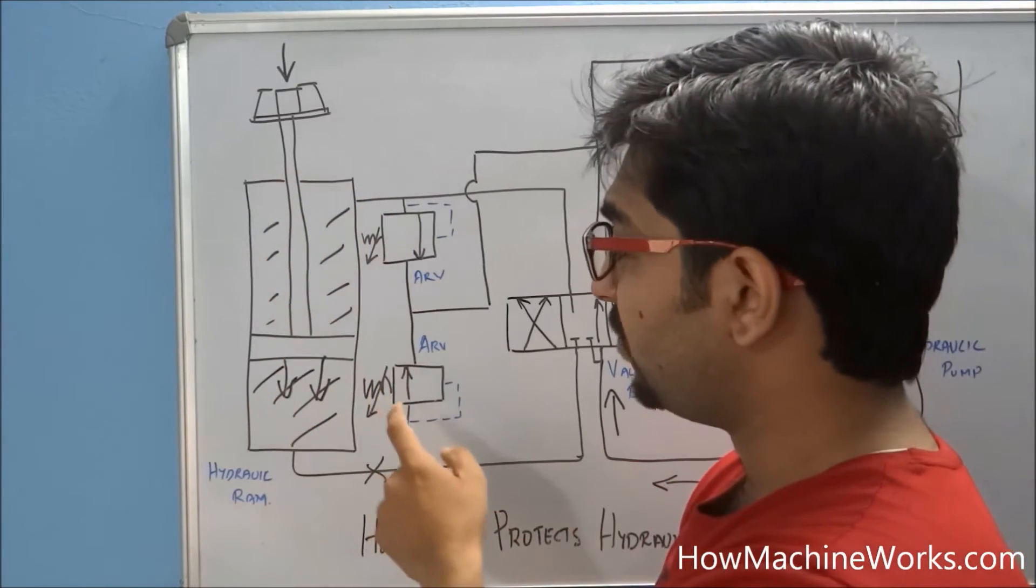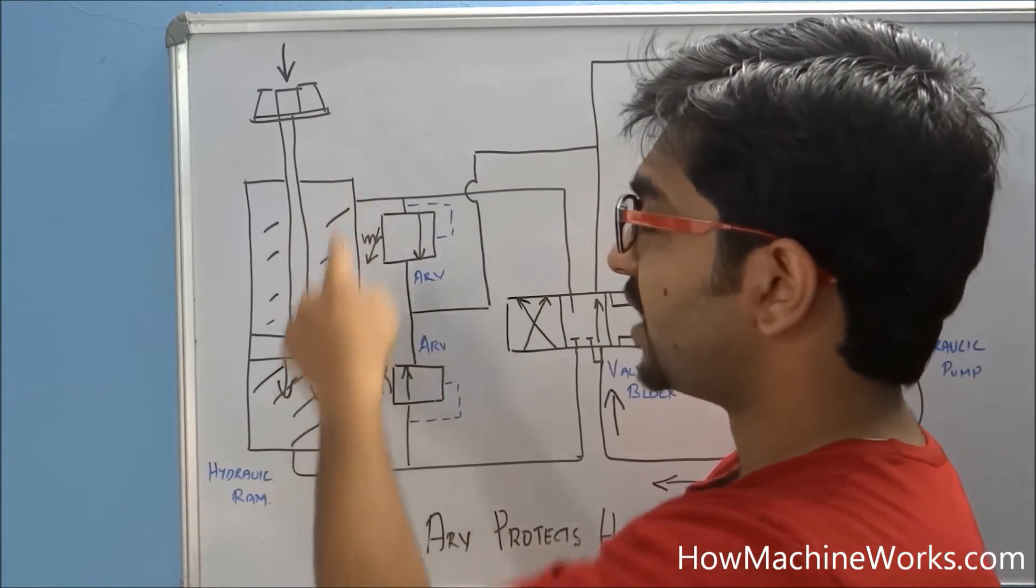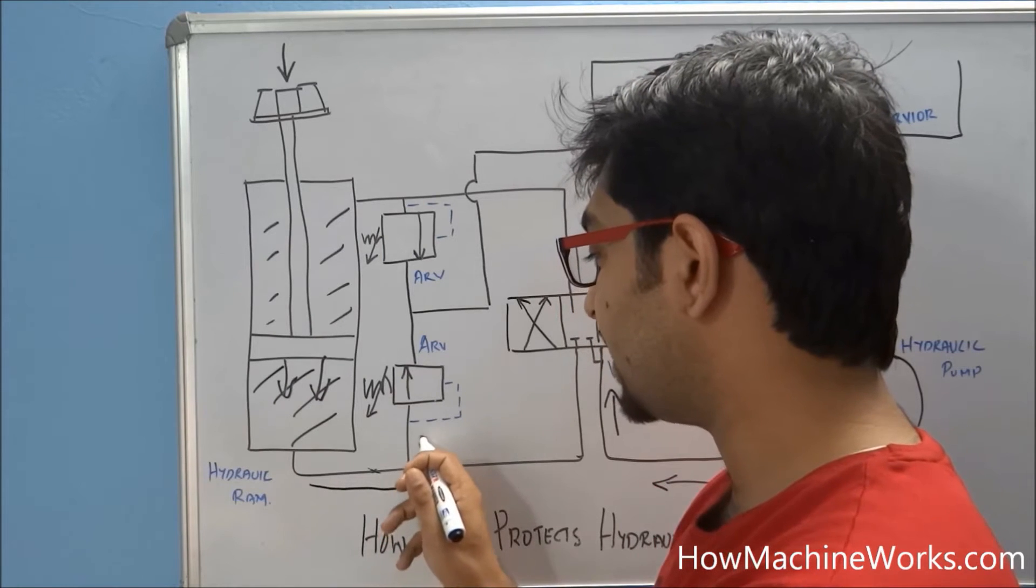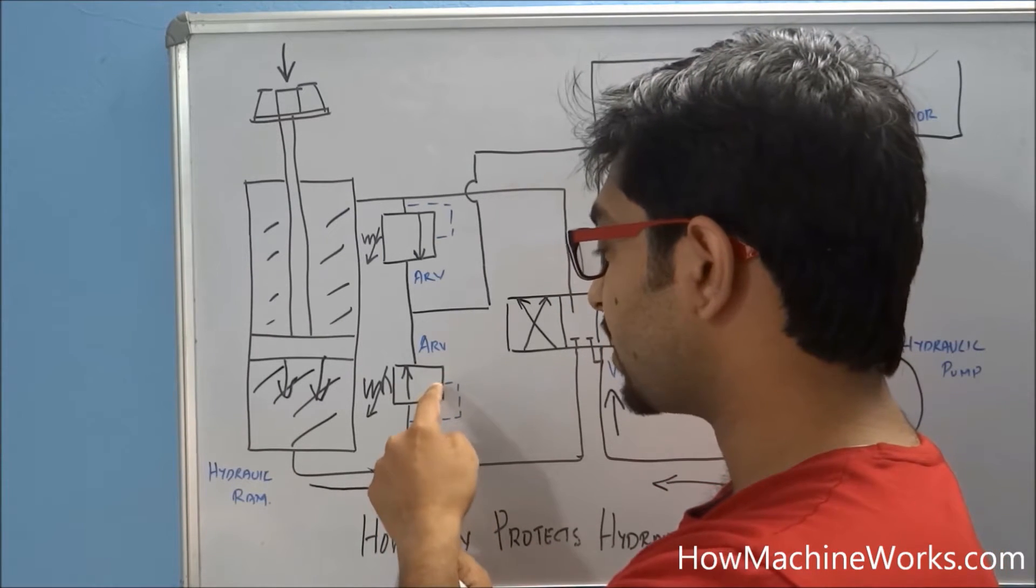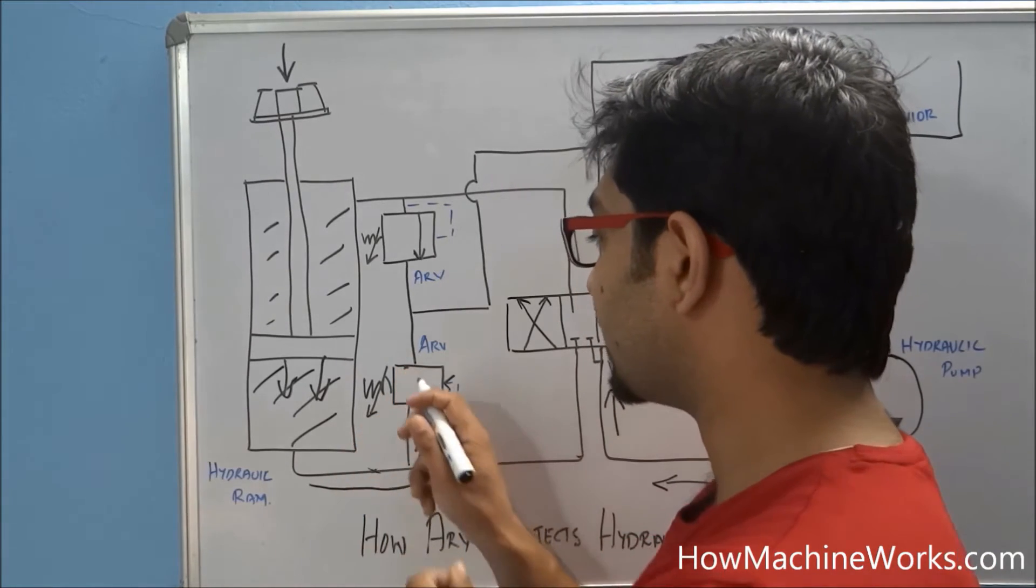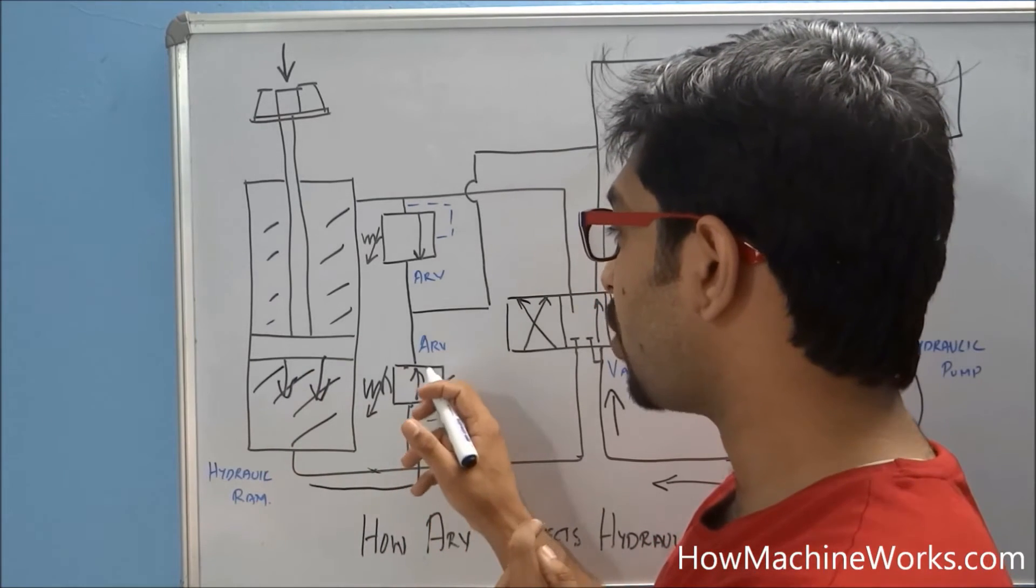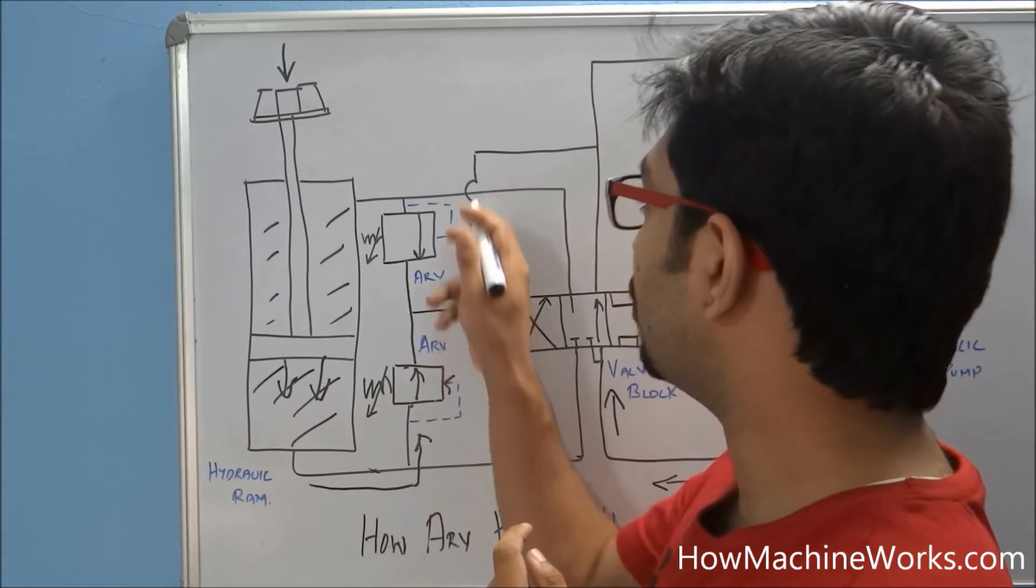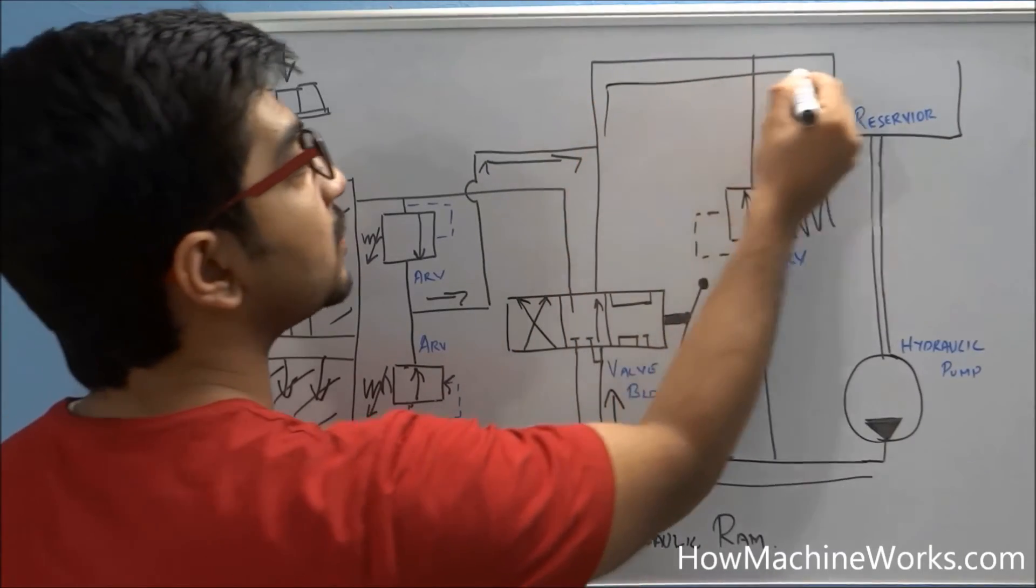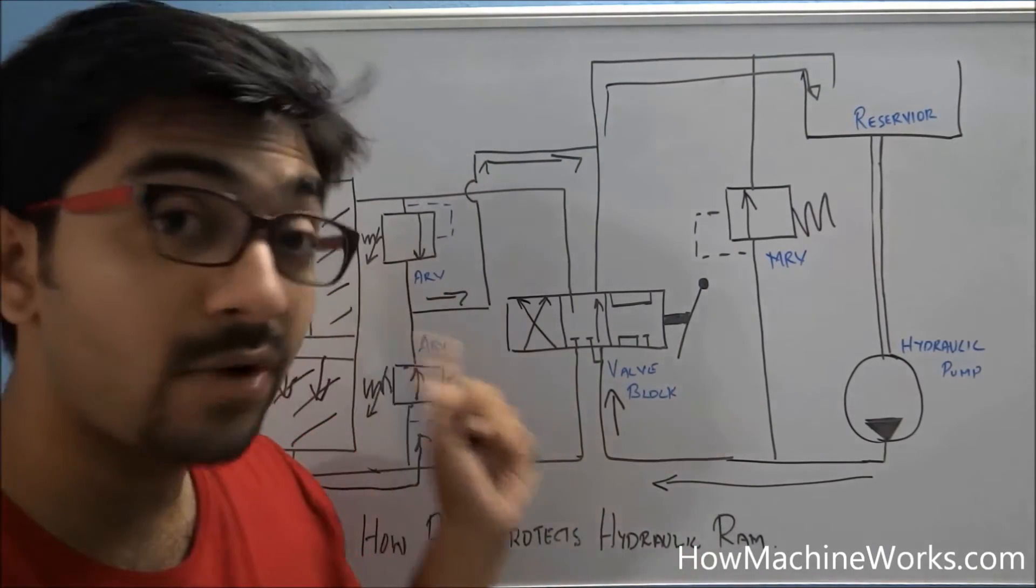To avoid such failures and protect the hydraulic ram, we have auxiliary relief valves both in the head side and rod side of the hydraulic ram. When excess pressure is coming, it hits the auxiliary relief valve and the auxiliary relief valve moves - you can see this arrow gets aligned. The excess pressure will be vented through the auxiliary relief valve in this direction and goes towards the return line, back towards the hydraulic tank, thereby protecting the hydraulic ram.